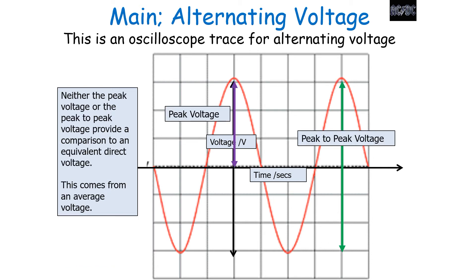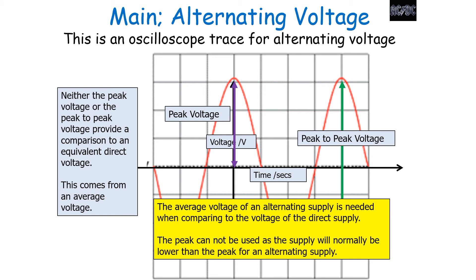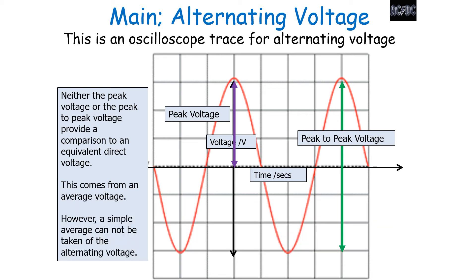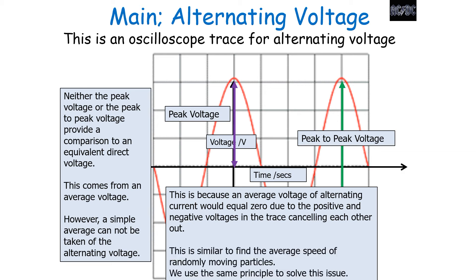Neither the peak voltage nor the peak-to-peak voltage provides a comparison to the equivalent direct voltage — this comes from an average voltage calculation. The average voltage of an alternating supply is needed when comparing to a direct supply. However, a simple average cannot be taken of an alternating voltage, because the average would equal zero due to the positive and negative voltages cancelling each other out. This is similar to finding the average speed of randomly moving particles — they would average out to zero without a specific principle to solve this issue.